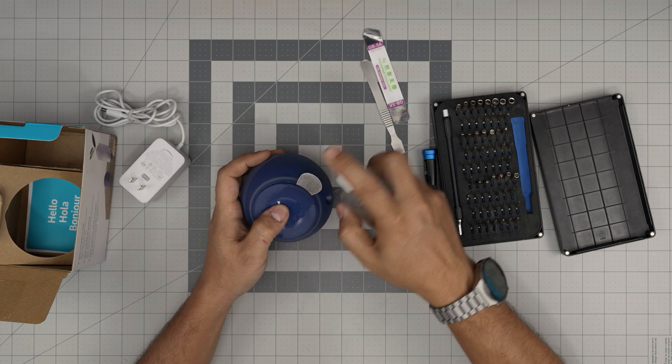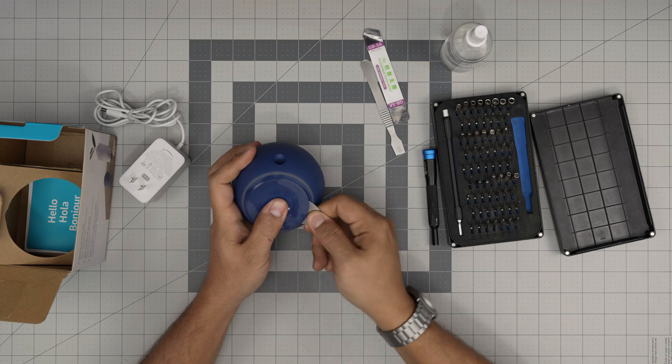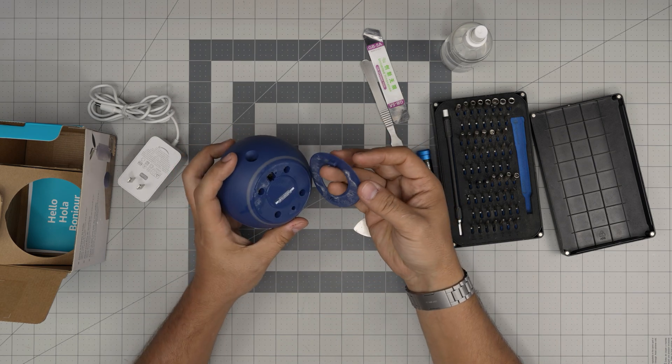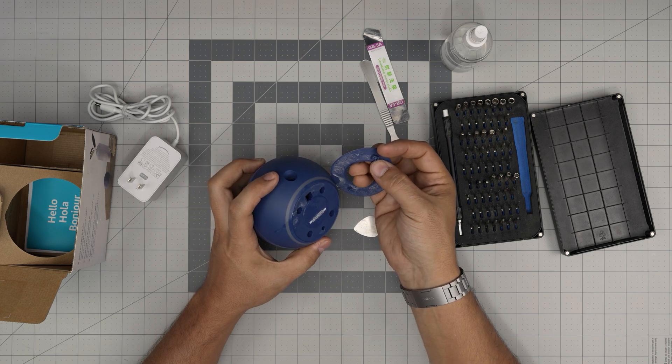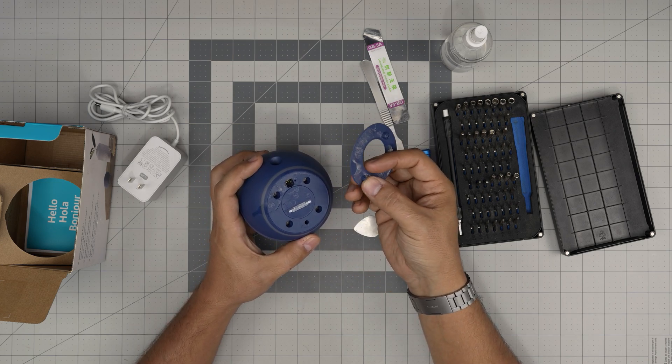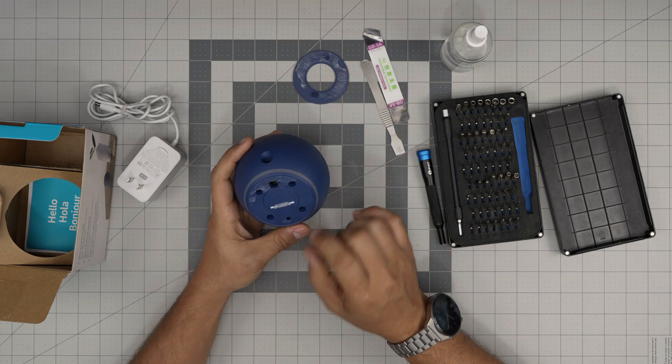It really comes out easy and there we have it. This one only goes in one way, so you can see this nice big bump right there that goes through here, and this tiny pin goes right through that pin hole right there.